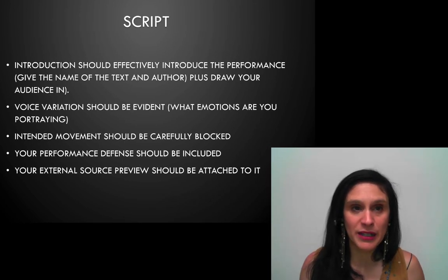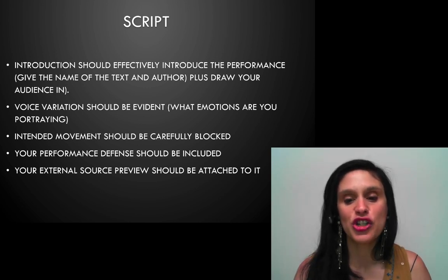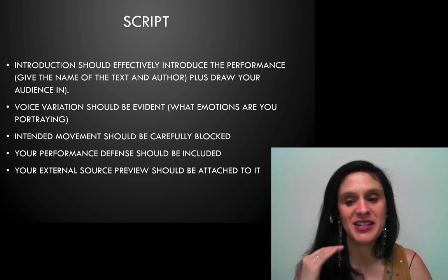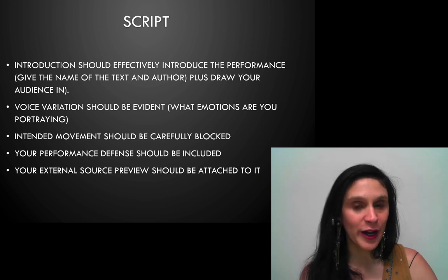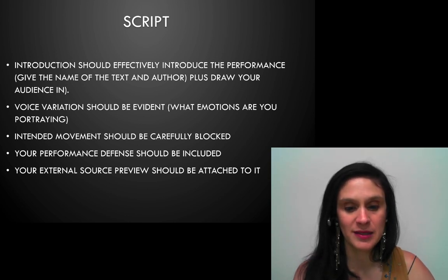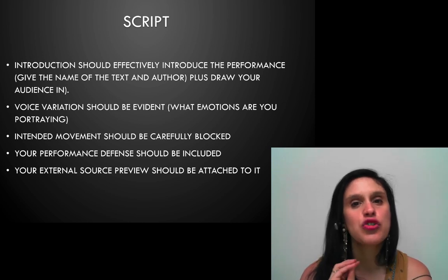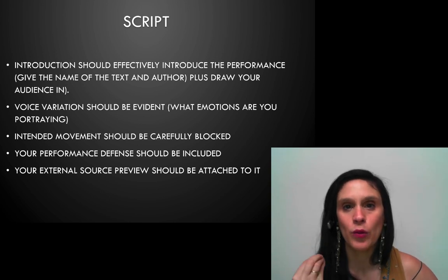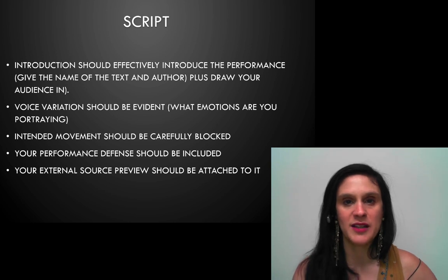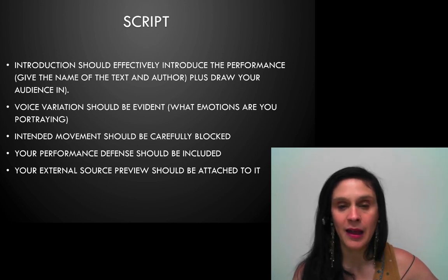Once you've picked your piece, decided where it begins and ends, you'll make a script to turn in to the assignment on Canvas. The introduction should effectively introduce the performance, give the name of the text and the author, and include an attention getter to draw us in — something like 'I have a story about betrayal' or 'the characters learn a hard lesson' — something to bring us in and get us ready. Voice variation should be evident. The most important thing is: what emotions are these characters portraying? How can you embody those emotions with your facial expressions, voice, and stance to help the audience feel and empathize? Being able to do that with authenticity is at the core of connecting as a public speaker.